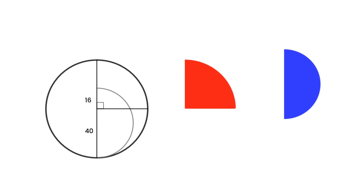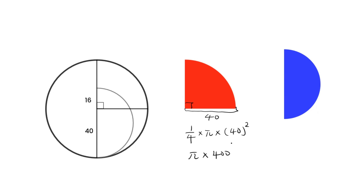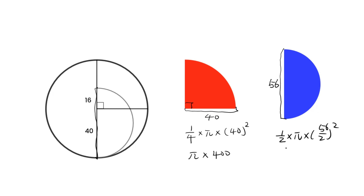It's not difficult to get the area of the sector and semicircle. Let's calculate red and blue. The area of red is 400π. The area of blue is 392π. So red is larger than blue.